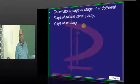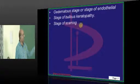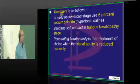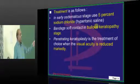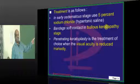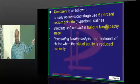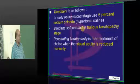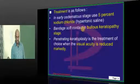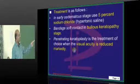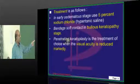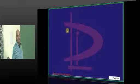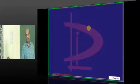After the beaten metal appearance stage, there is an edematous stage, then a bullous keratopathy stage, and ultimately a scarring stage. If it is at the bullous keratopathy stage, it is an indication for placing a bandage soft contact lens. When visual acuity is reduced, penetrating keratoplasty needs to be done.